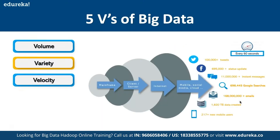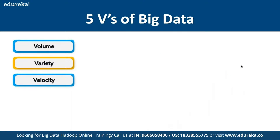The third V is Velocity — the rate at which data is currently being generated. From mainframe to client-server, internet, mobile, and social media platforms, they are all generating a humongous amount of data on a per-second basis. We have to make sure we have the systems to handle this much data being generated at an exponential rate, and that is what the big data component handles.